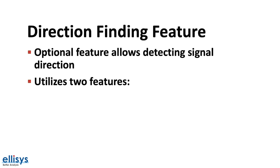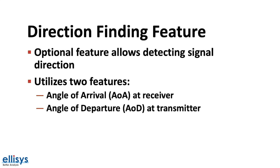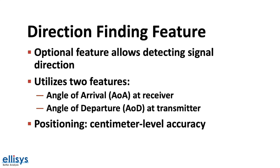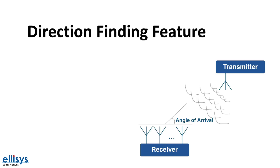To achieve this, it utilizes one of two new methods: angle of arrival at the receiver and angle of departure at the transmitter. For positioning systems, this helps achieve centimeter-level accuracy. In the case of proximity solutions, it enables the detection of the direction of the Bluetooth signal.